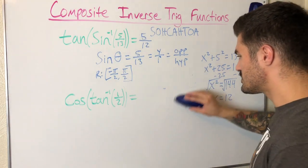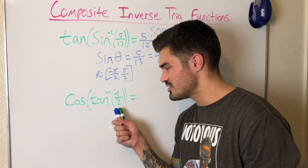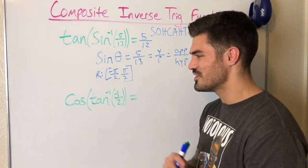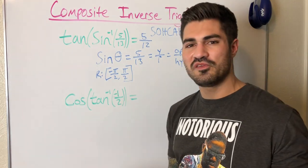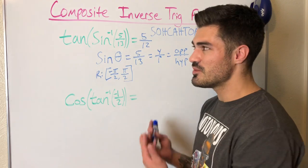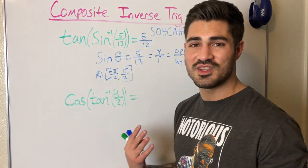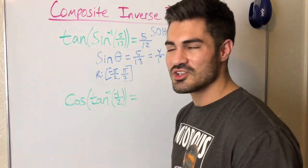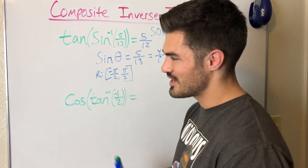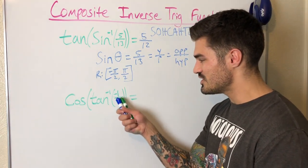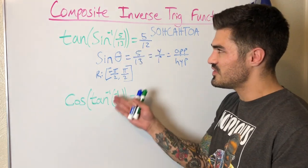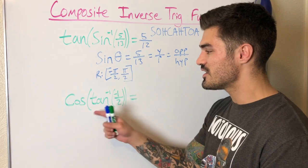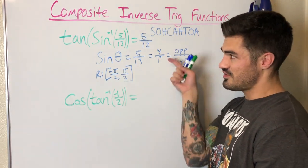Let's do one last example. I changed this to a negative to show an example where theta is not in the first quadrant. We're evaluating cosine of tangent inverse of negative one half. The process is the same: I'll draw a triangle, use the Pythagorean theorem, and use my definitions for sine, cosine, and tangent — SOH-CAH-TOA. So let's get started: tangent inverse of negative one half is some angle, and I need to find the cosine of that angle.